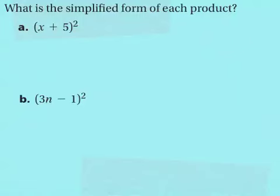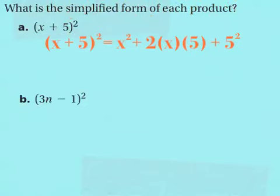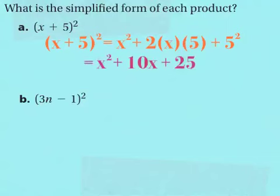This first example asks for the simplified form of each product. Using the special case, x plus 5 squared is going to equal your first term x squared, plus 2 times x times 5, plus 5 squared. x squared stays the same, 2 times 5 times x is 10x, and 5 squared is 25. So the answer is x squared plus 10x plus 25.